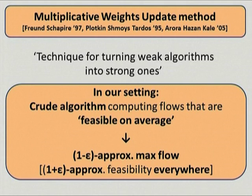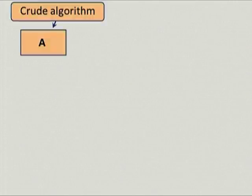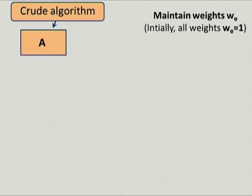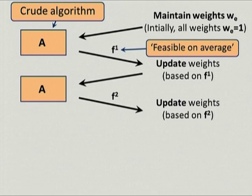Here is how it works. We treat the crude algorithm as a black-box oracle. We maintain weights, one per edge, all initially equal to one. We query the oracle with these weights, receiving a flow of value F* that is feasible on average. We then update the weights based on this flow and query again, receiving another flow. We keep doing this for some number of iterations, and at the end we return the average of all flows computed along the way.